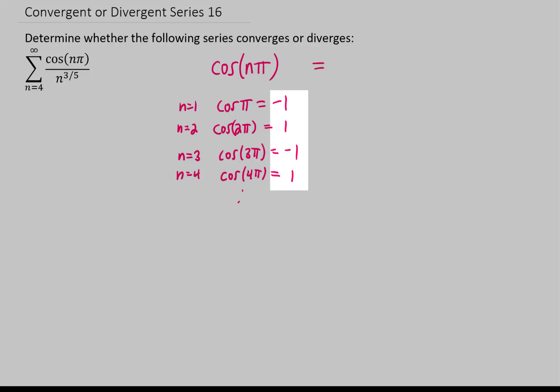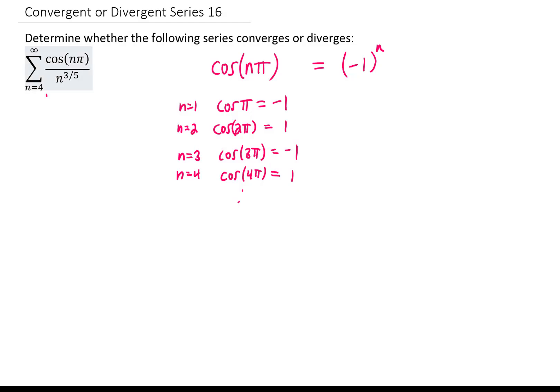What you realize is this gives us an alternating term. In fact, cosine of n pi can just be rewritten as negative 1 to the n power. So if we do that, what we have is an alternating series.